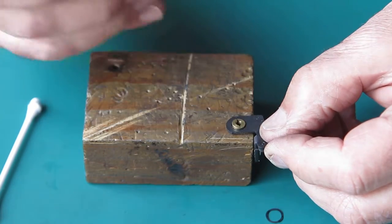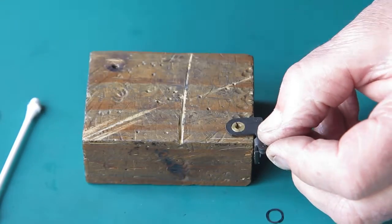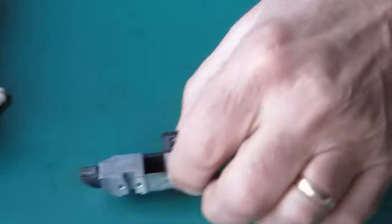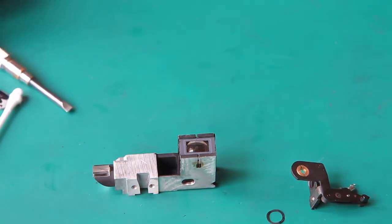Now the bush can go back on there, making sure I get my little alignment mark in the right place, and we're ready to reassemble the rangefinder.